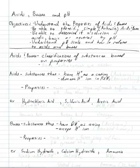In this lesson, we are going to discuss acids, bases, and pH associated with that. By the end of this, we should know the properties of acids and bases. We should be able to identify simple acids and bases. We should be able to determine if the solution is acidic, basic, or neutral by looking at the pH. We should also understand the pH scale and how it relates to acids and bases.